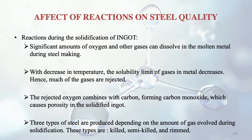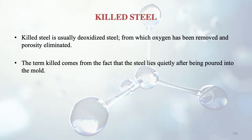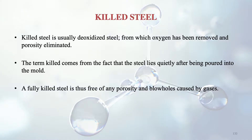Three types of steel are produced depending on the amount of gas involved during solidification: killed, semi-killed and rimmed. Killed steel is fully de-oxidized steel from which oxygen has been completely removed and porosity eliminated. The term 'killed' comes from the fact that the steel lies completely quiet after being poured into the mold. A fully killed steel is free of any porosity and blow holes caused by gases, and its chemical and mechanical properties are relatively uniform throughout.